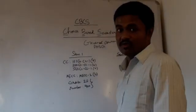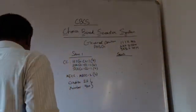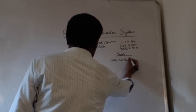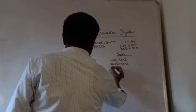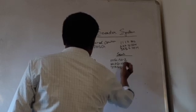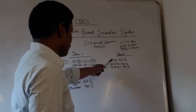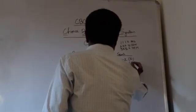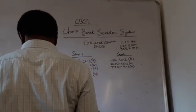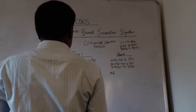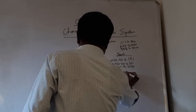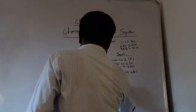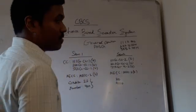Semester two is pretty similar. You'll have three core courses from each discipline: 111G CC2 (core physics), 222G CC2 (core chemistry), and 333G CC2 (core mathematics), each carrying six credits. There will also be an ability enhancement compulsory course (AECC type 2) worth two credits. The total number of credits is again 20, with four papers of 100 marks each for a total of 400 marks.